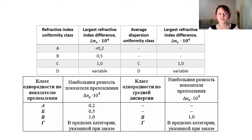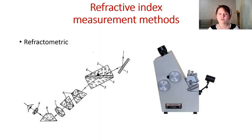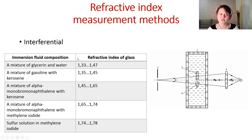In Russian standards we have categories and classes: category is for deviation of refractive index and mean dispersion for one glass blank, and classes are for series of glass blanks. Standard measurement methods for refractive index are goniometric (with a goniometer), refractometric (with a refractometer), and interferential, which is based on interference of light in a system with immersion fluid and glass blank inside. There are several kinds of immersion fluids for different refractive index ranges.